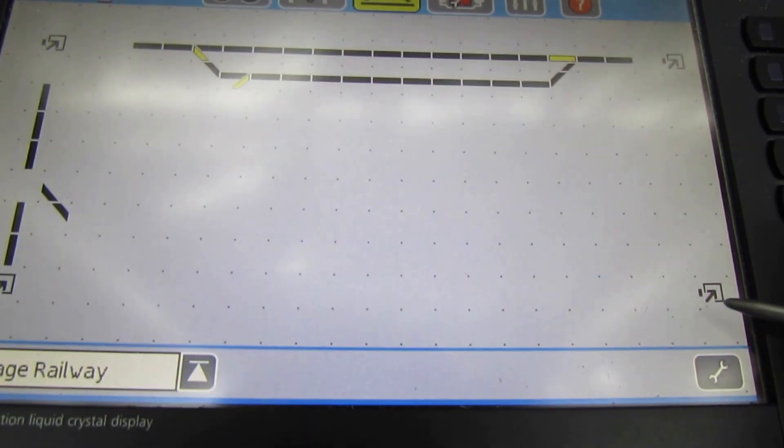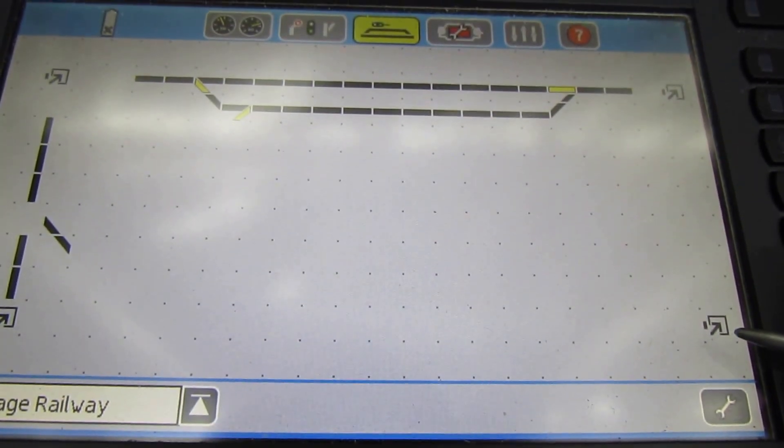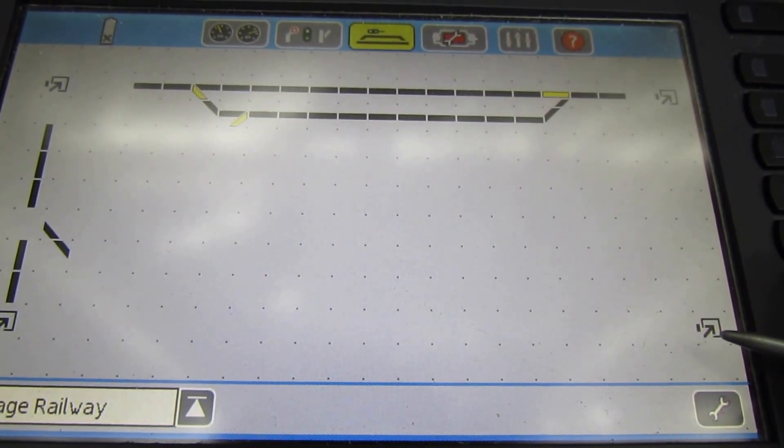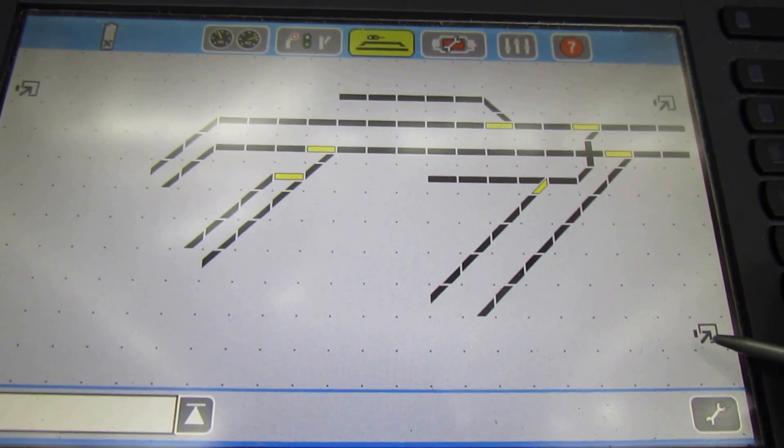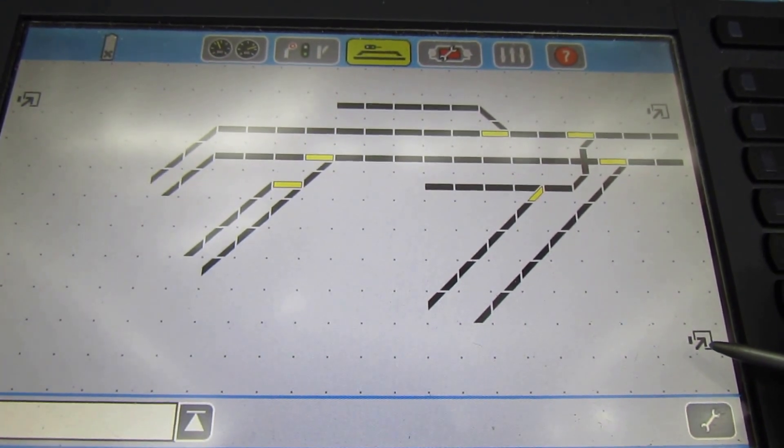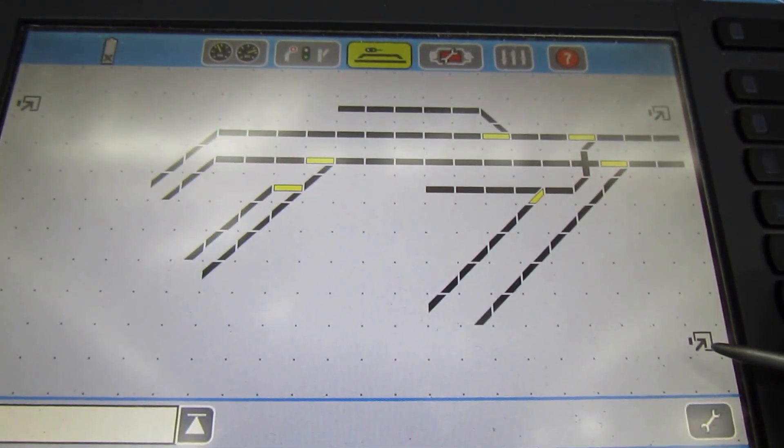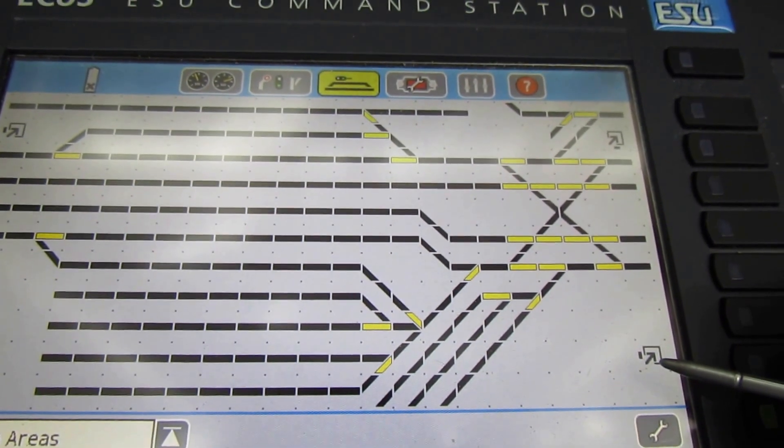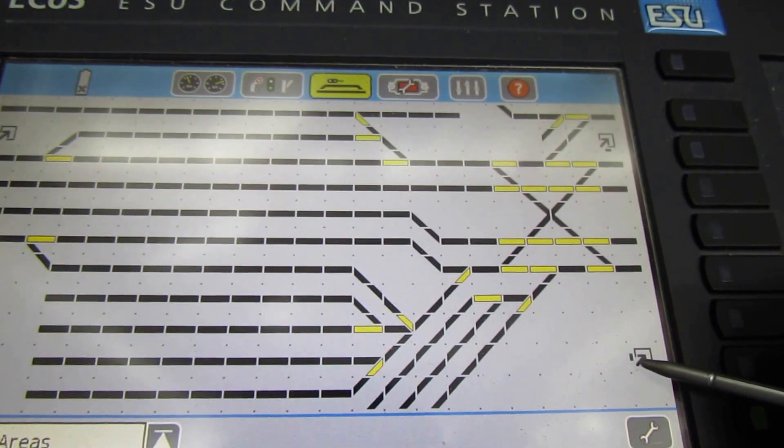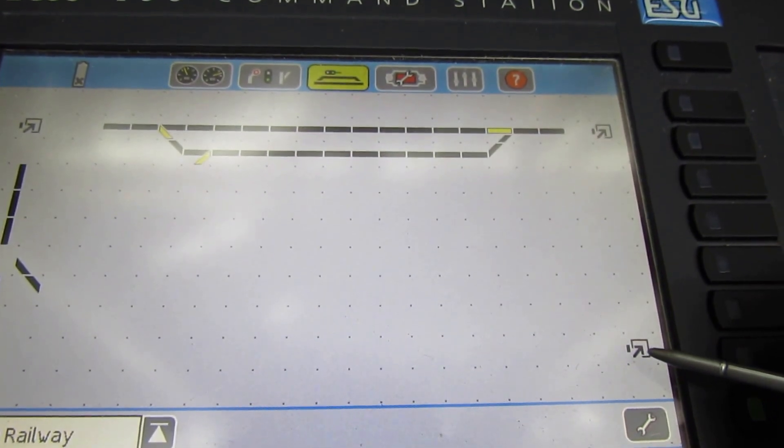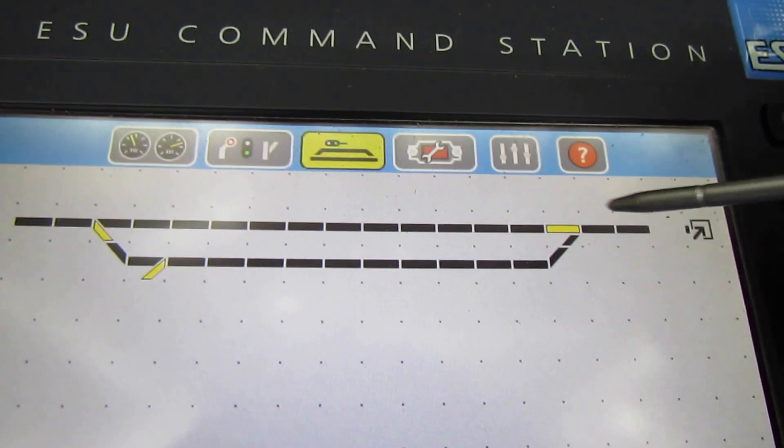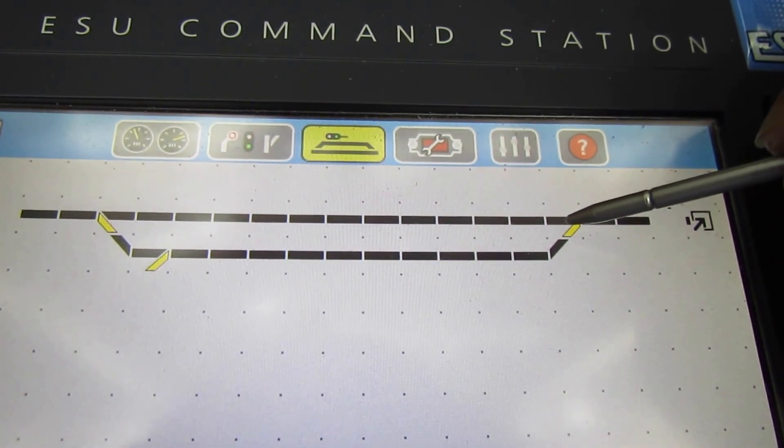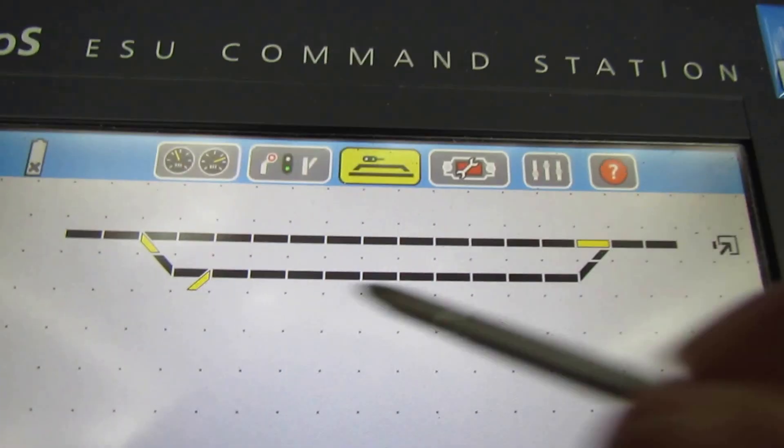This is my ECOS and that's the diagram that covers the fiddle yard area. That's the one that covers the new heritage railway that I'm going to build and also the little loop I've just built. That's going to be the TMD area and that is the station area and the station approach.